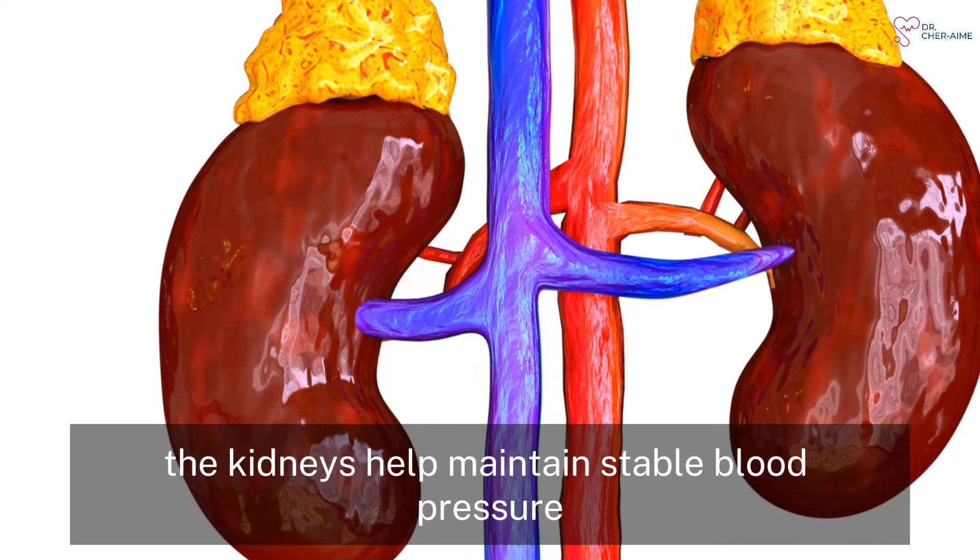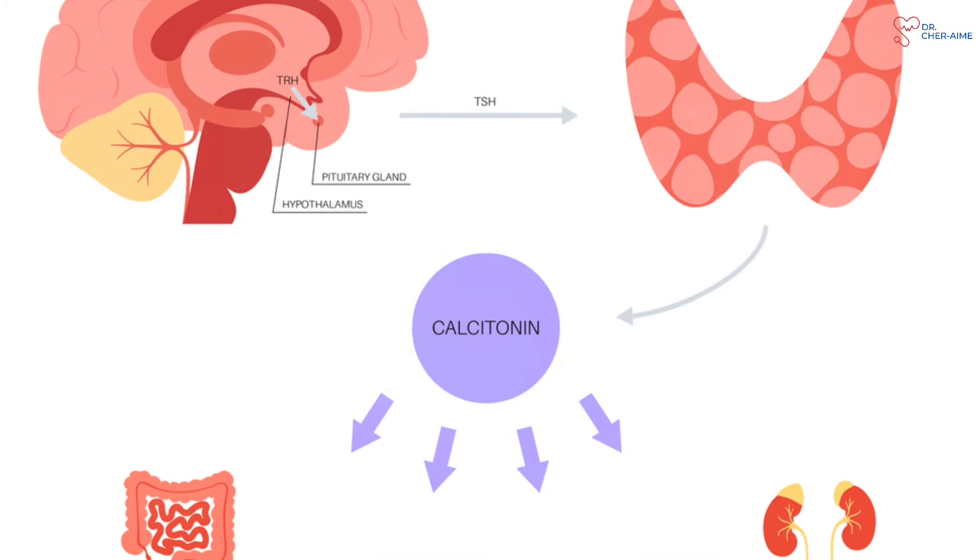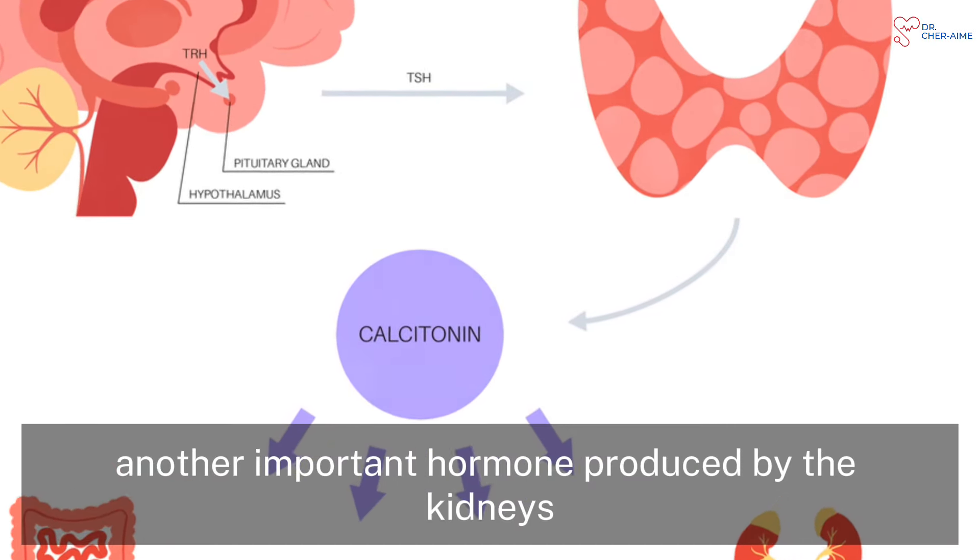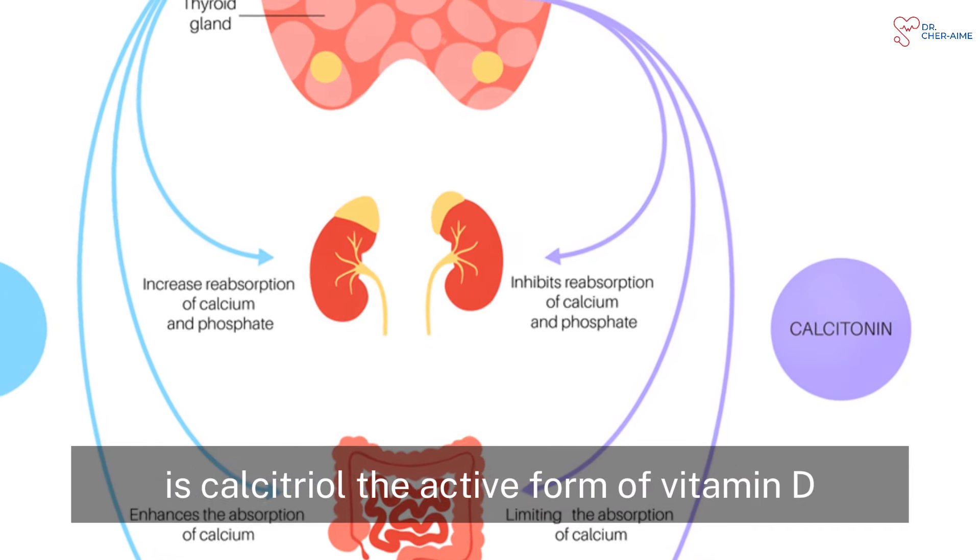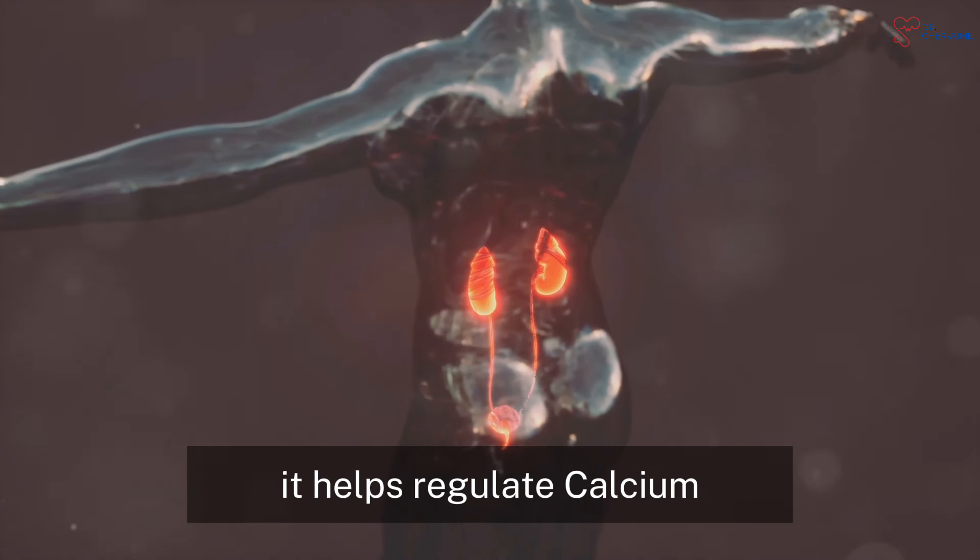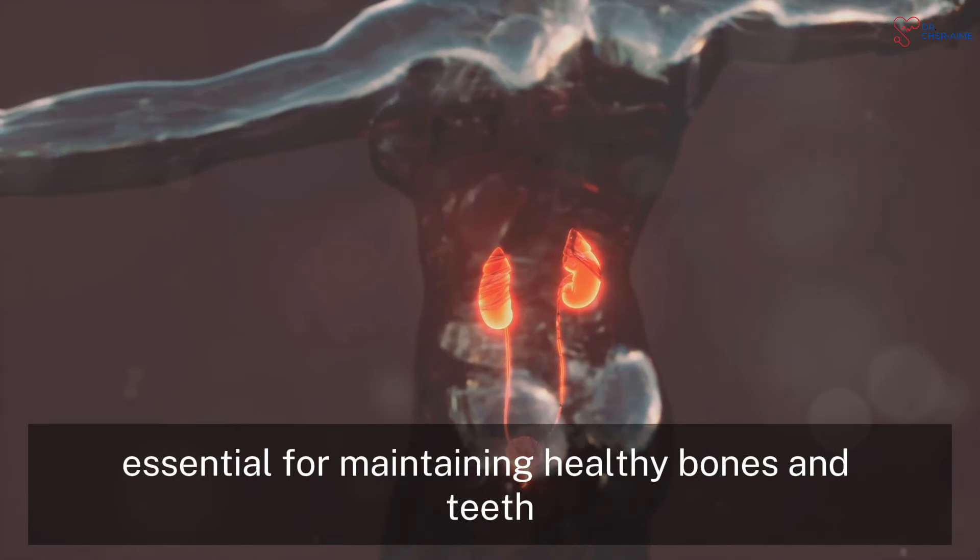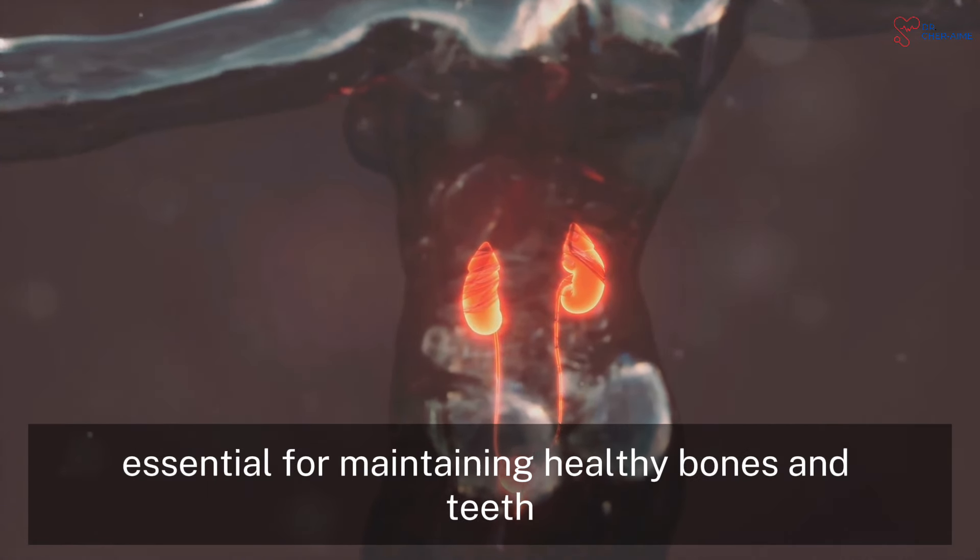Another important hormone produced by the kidneys is calcitriol, the active form of vitamin D. It helps regulate calcium and phosphate levels in the blood, essential for maintaining healthy bones and teeth.